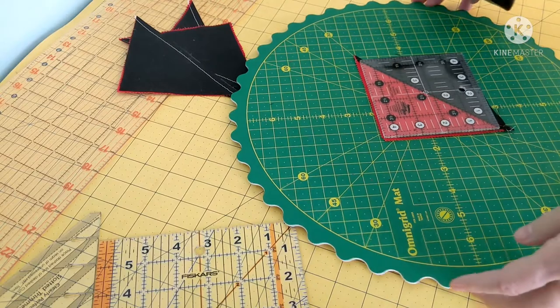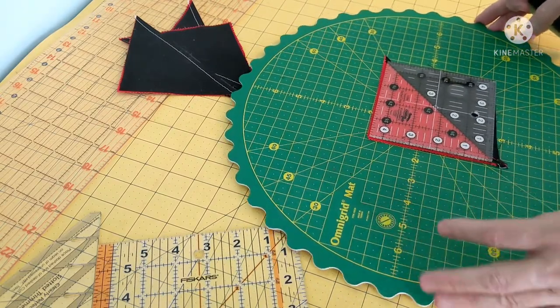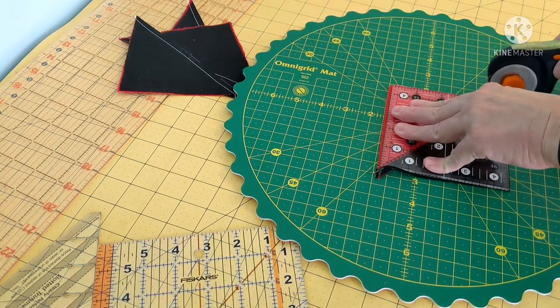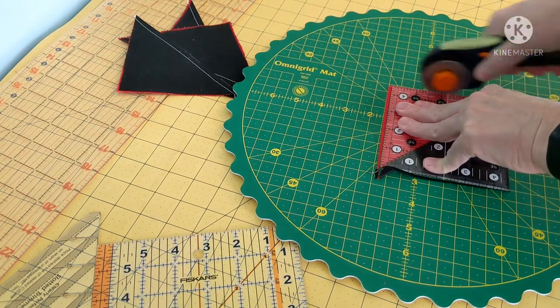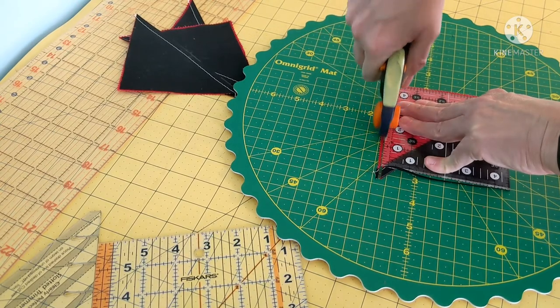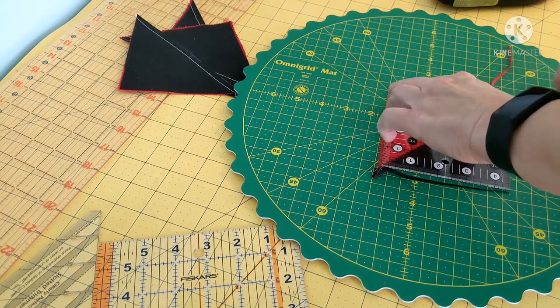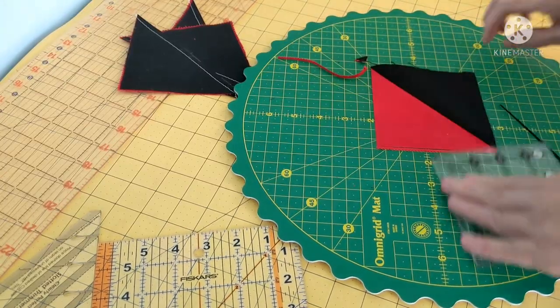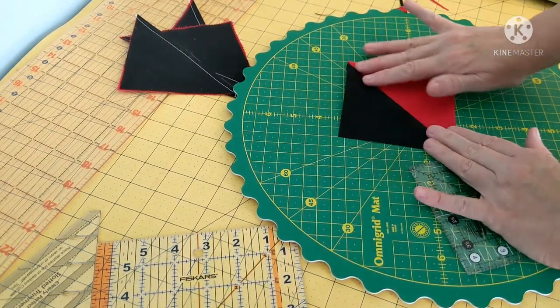And trim and trim, make sure you keep that diagonal lined up. Oops, oops, this side. There we go. Okay, and you have your square.